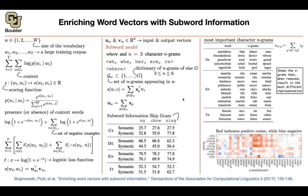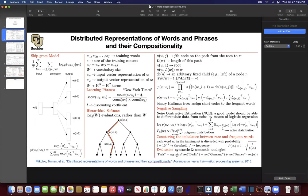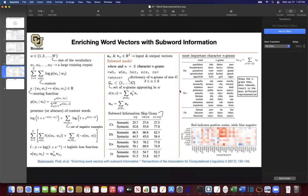In summary: we included subword information in this model. We also previously included phrases like 'New York Times' as combinations of multiple words in our vocabulary. So now we know how to handle words, how to handle phrases, and how to handle subword information for rare or unseen words. This is actually how humans solve the same problem — when we see a new word we haven't seen before, we look at its subwords and try to associate meaning to it.